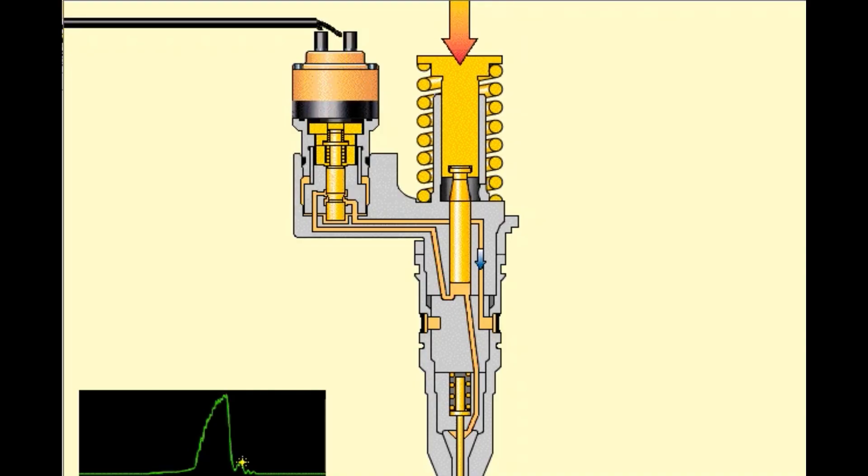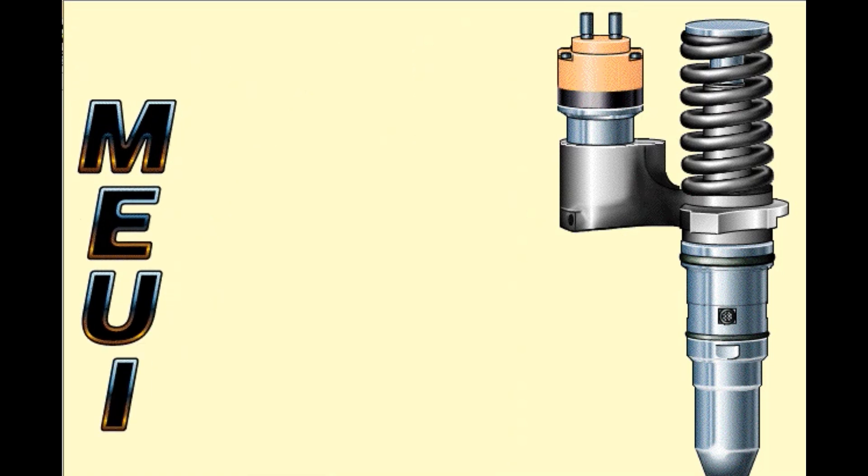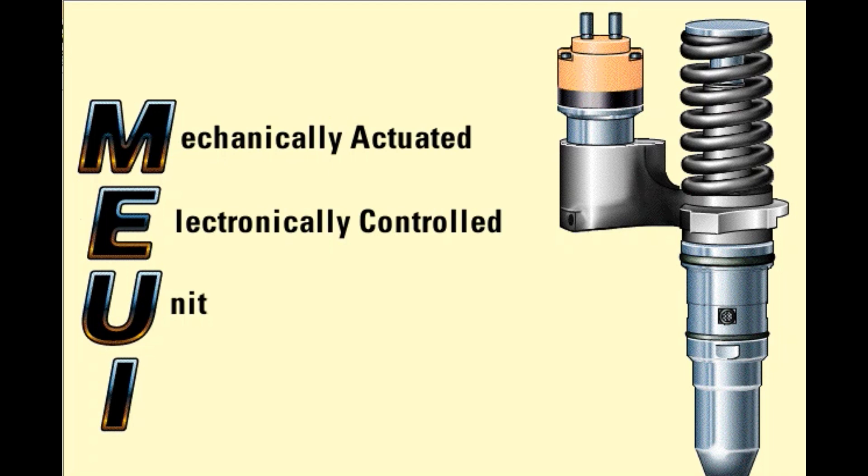Diesel fuel systems use a plunger and barrel to pump high-pressure fuel into the combustion chamber. The cam lobes, pushrods, and rocker arms mechanically actuate the injectors. The term MEUI is actually an abbreviation for Mechanically Actuated Electronically Controlled Unit Injector.